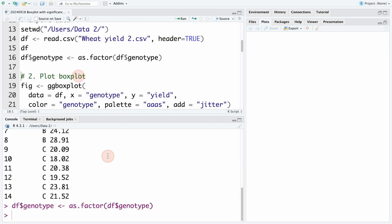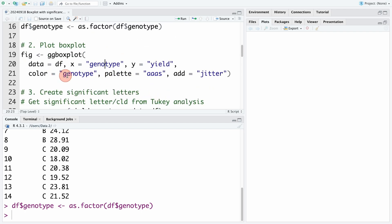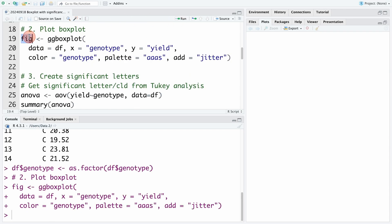In the second step, we plot a boxplot with the code ggboxplot. Data df is used for this plot. X axis is genotype and Y axis is yield. Color of the boxplot is selected based on genotype, and the color code is AAAS. Data is used to show all observations. We name the plot fig. We run the code and this is the boxplot.